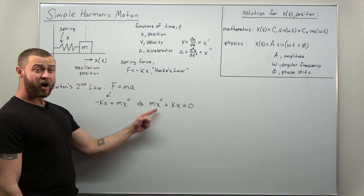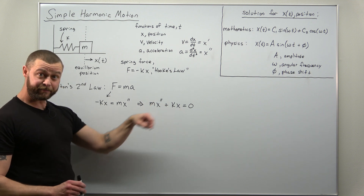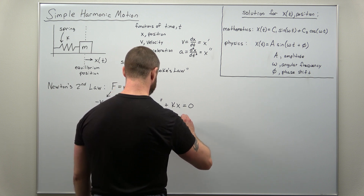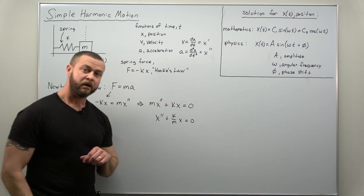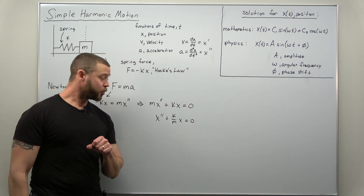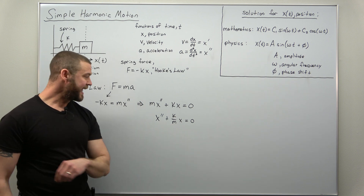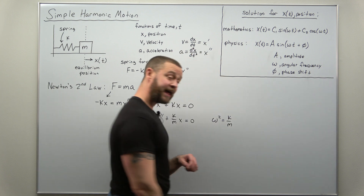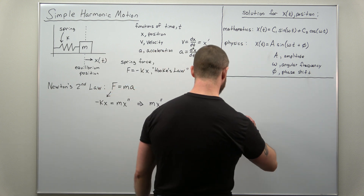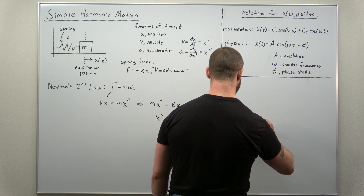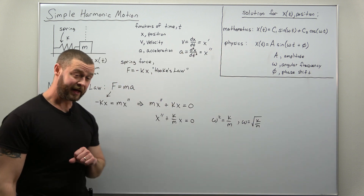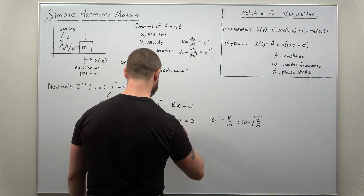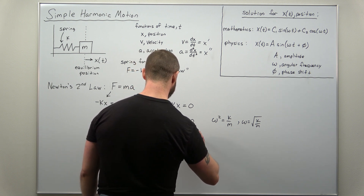We generally want a coefficient of one in front of the second derivative term, so we divide both sides by the mass m. We then introduce the angular frequency omega, where omega squared equals k over m — equivalently, omega is the square root of k over m. Plugging that in, we rewrite the equation as x double prime plus omega squared times x equals zero.